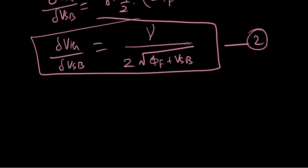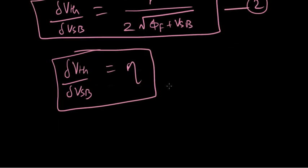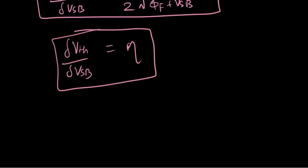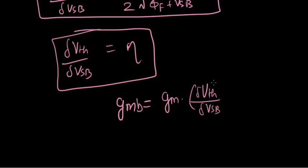Now, this weird looking thing is nothing but eta. Del Vth over del Vsb, just for our convenience we call it eta. All right. Sorry about that interruption there. So this is what we got. GMB equals GM times do Vth over do Vsb. This is now eta. So GMB equals eta times GM.